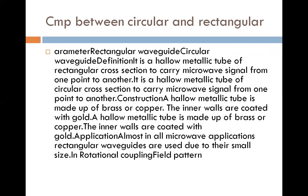Construction: a hollow metallic tube is made up of brass or copper. The inner walls are coated with gold. In circular waveguide, a hollow metallic tube is made up of brass or copper. The inner walls are coated with gold.